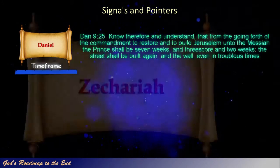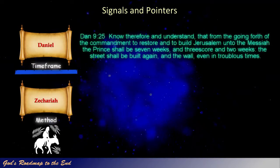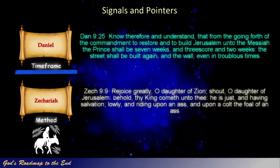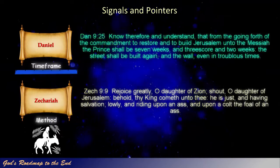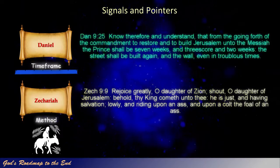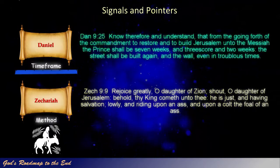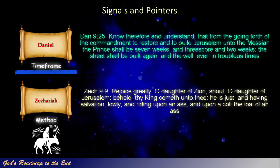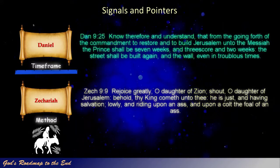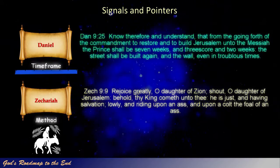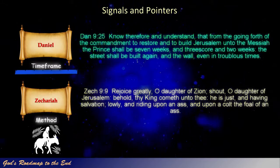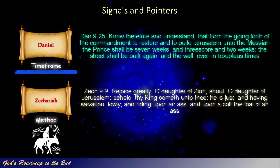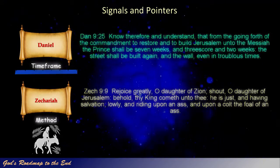In Zechariah 9 we find a description of how Israel's Messiah would present himself to his chosen nation. Zechariah 9 verse 9: Rejoice greatly, O daughter of Zion, shout, O daughter of Jerusalem, behold, thy king cometh unto thee. He is just, and having salvation, lowly, and riding upon an ass, and upon a colt, the foal of an ass.